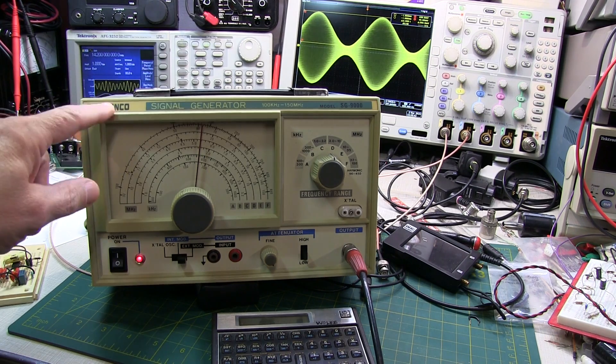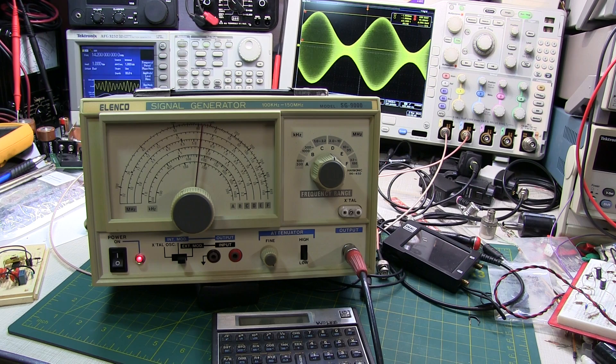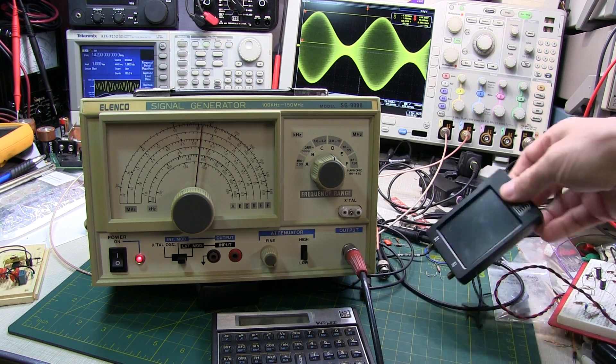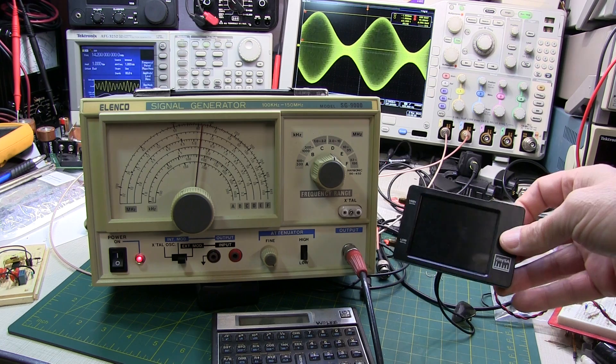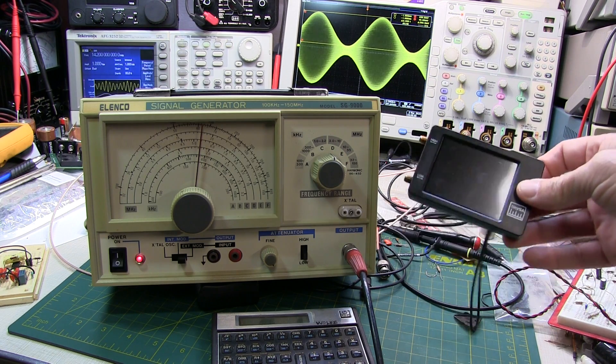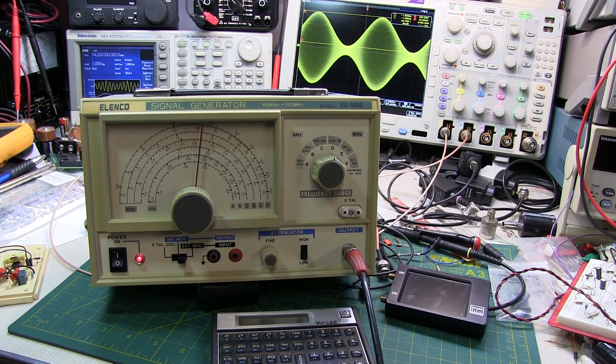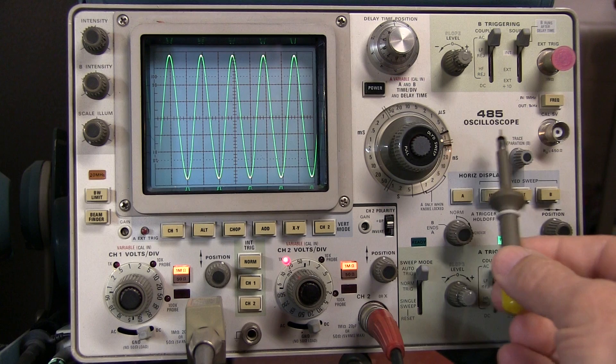So this old Elenco signal generator is something that can typically be found for less than $100 at a ham fest, and a lot of folks will have something like that. Or even something like this little TinySA. It's got a little signal generator in it that can generate an AM signal. So let's go take a look at these, but not on the digital scope, but on an analog scope.